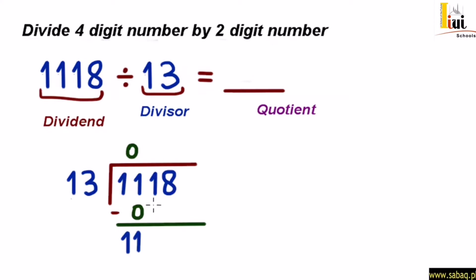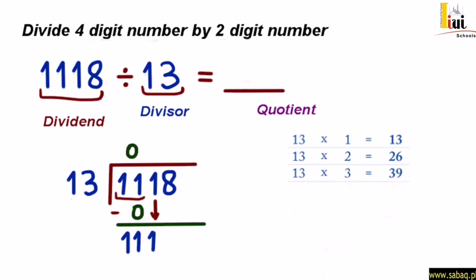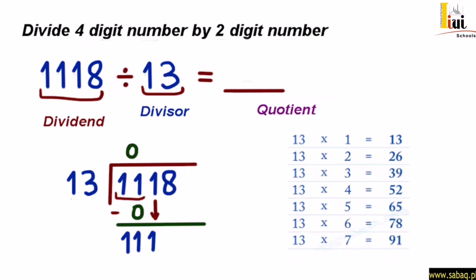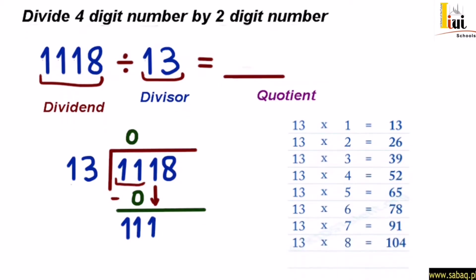अब अगला step क्या होता है? इन दो digits के बाद अगला digit नीचे लेकर आते हैं। तो 11 के साथ 1 नीचे आकर 111 बन जाएगा। अब 111 को हम देखते हैं कि 13 के टेबल में कब आता है। 13 का टेबल: 1s are 13, 2s are 26, 3s are 39, 4s are 52, 5s are 65, 6s are 78, 7s are 91, 8s are 104, 9s are 117।